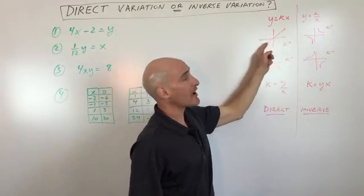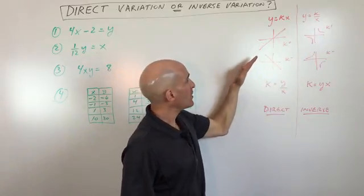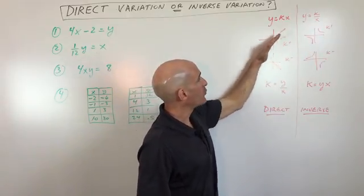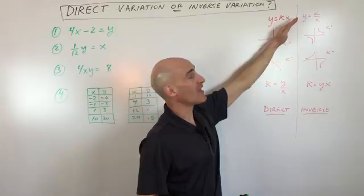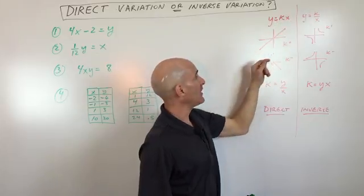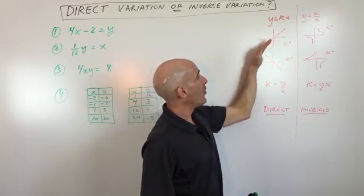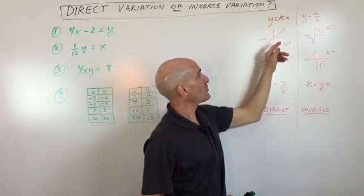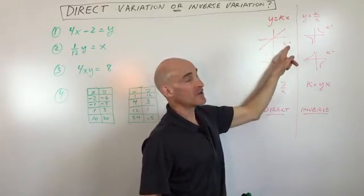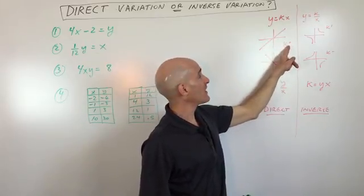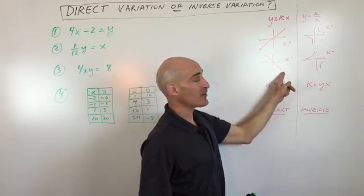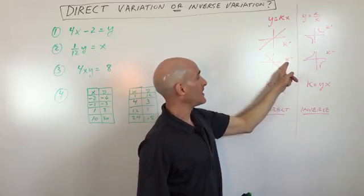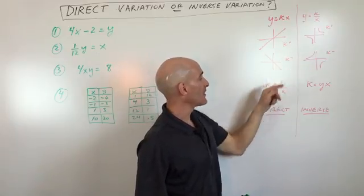When you graph direct variation equations, the graph will go right through the origin. It's a straight line, and it's going to go up to the right with a positive slope if k, the constant, is positive. It's going to go down to the right with a negative slope if k is negative.